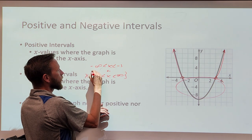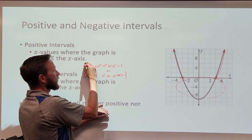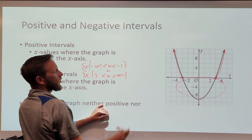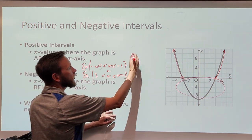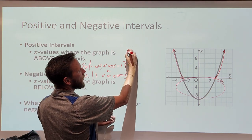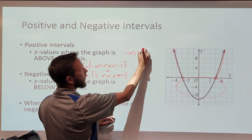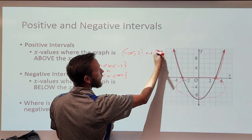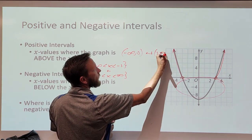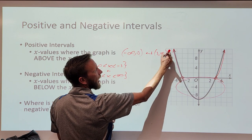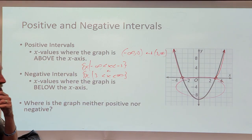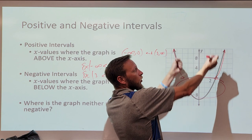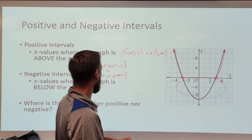When you are using set builder notation, it's going to look like so. If you're using interval notation, you're going to say from negative infinity to negative 3, exclusive, and from 3 to positive infinity, exclusive. Those are the parts of the graph where the outputs are above the x-axis.